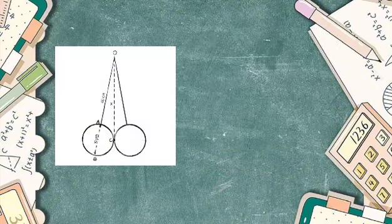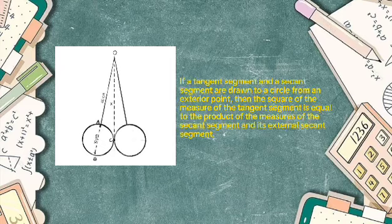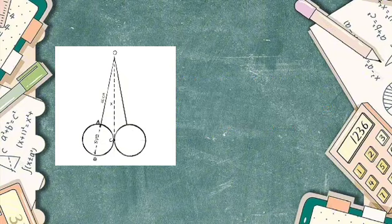The diameter combined with the length of the string used to hang the bulb will be the secant. The broken line will be your tangent. If a tangent segment and a secant segment are drawn to a circle from an exterior point, then the square of the measure of the tangent segment is equal to the product of the measure of the secant segment and its external secant segment.